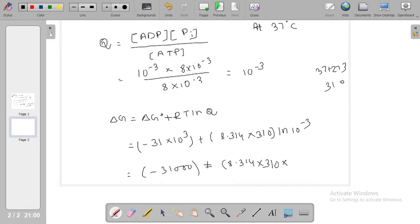We have minus minus and 3 here, and ln 10. We can convert it to log, so log 10 equals 1. Just multiply by 2.303.